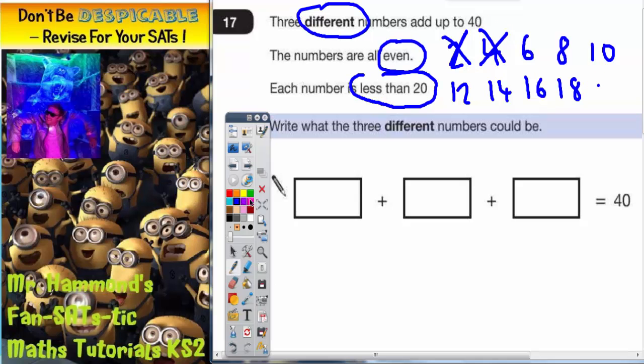Now before we do any more I think it's worth pointing out that there is more than one answer to this. Okay so we'll try and look at a few different answers. So I could, another good strategy would be to try and get as close to 40 as possible with my first number and that would obviously mean using the biggest number. So I could put 18 in there.